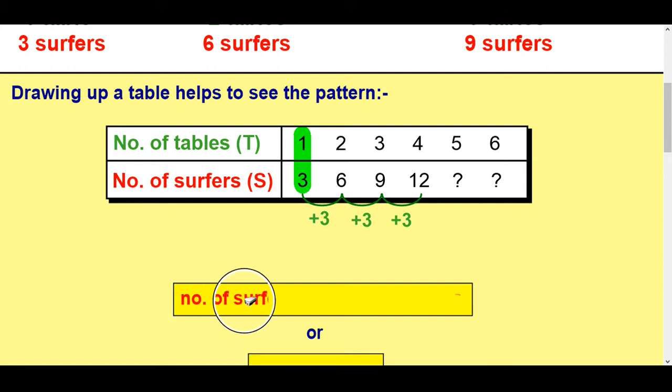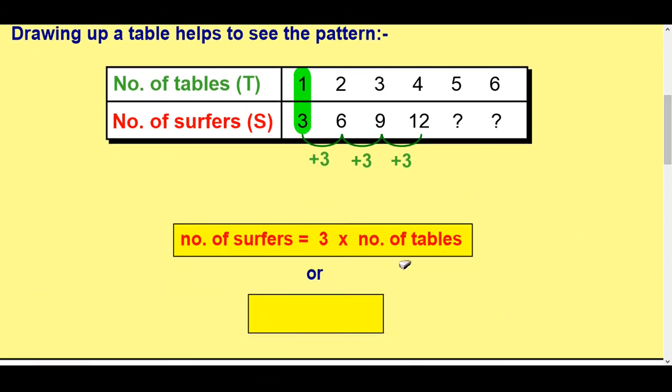So really what we're saying is to get the number of surfers you do three times the number of tables. And a shortened version of that and more of a formula would be S for surfers equals three times T for tables. And you could even shorten that to S equals 3T. And there we've got a formula. So you'll notice here whatever it's gone up in is what you've multiplied by. So it's gone up in threes and that's ended up being a multiple of three.